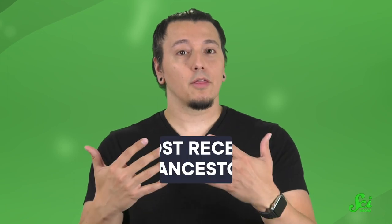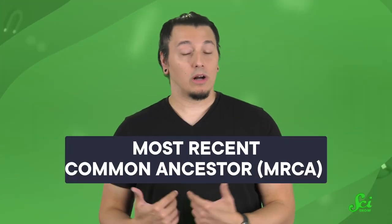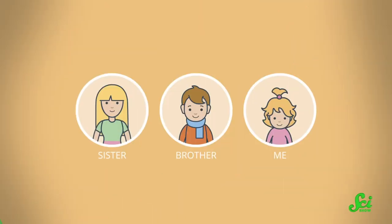We're the same species, after all, so we have ancestors that we all share. And the very first person that we can call an ancestor is called the most recent common ancestor for our species. While we'll probably never know their name, there are a lot of ways that we can narrow down when they lived. And as it turns out, that's probably not as long ago as you'd think.